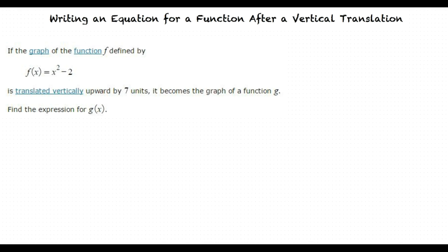Well, since we want to translate the function vertically upward, we need to add 7 to the original function, right? That's correct. When we do this, our function will now read, f(x) = x² - 2 + 7.